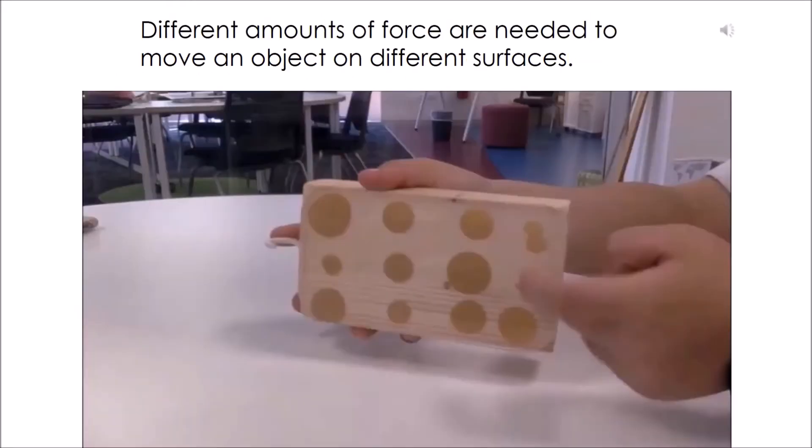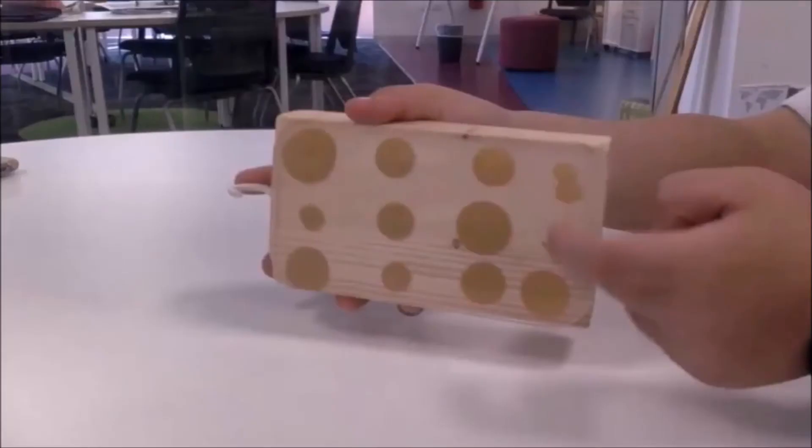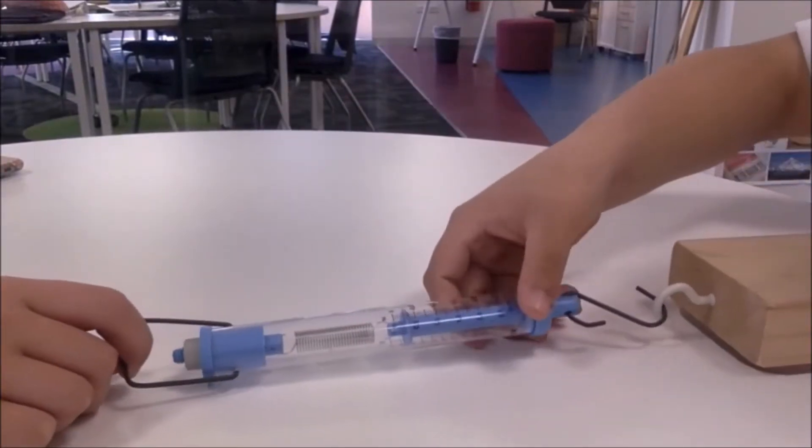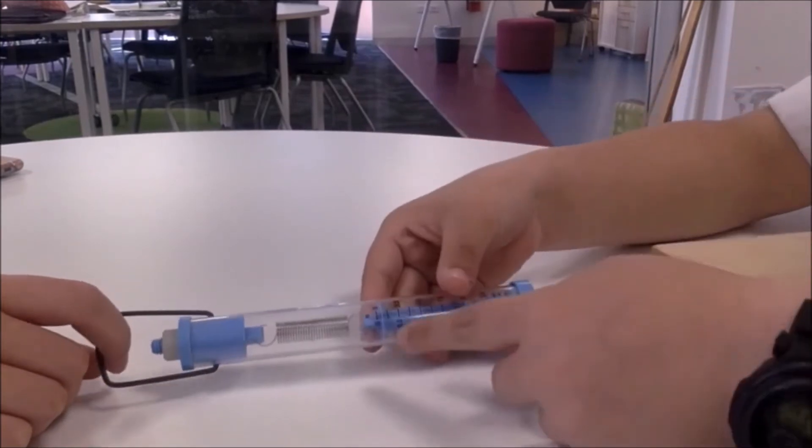Different amounts of force are needed to move an object on different surfaces. We can see in this video that they have a block of wood. It has a smooth plastic surface on it. They move the block across the surface and take a reading.